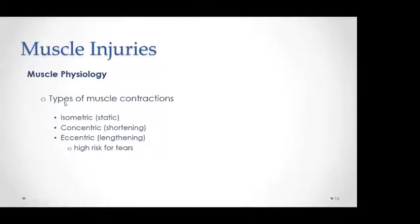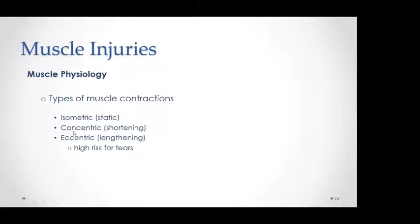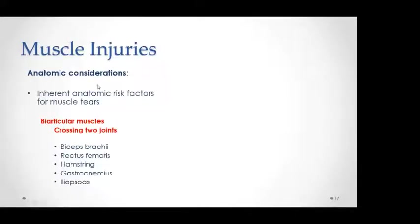Before that, a little about muscle physiology as it relates to how muscle injuries occur. There are three types of muscle contractions: isometric contraction with no change in length, concentric contraction with shortening of the muscle, and eccentric contraction with lengthening of the muscle. Eccentric contraction puts the muscle at higher risk for tears, which we see quite often in athletes. Biarticular muscles — those crossing two joints like the biceps, rectus femoris, hamstring, gastrocnemius, and iliopsoas — are at higher risk.